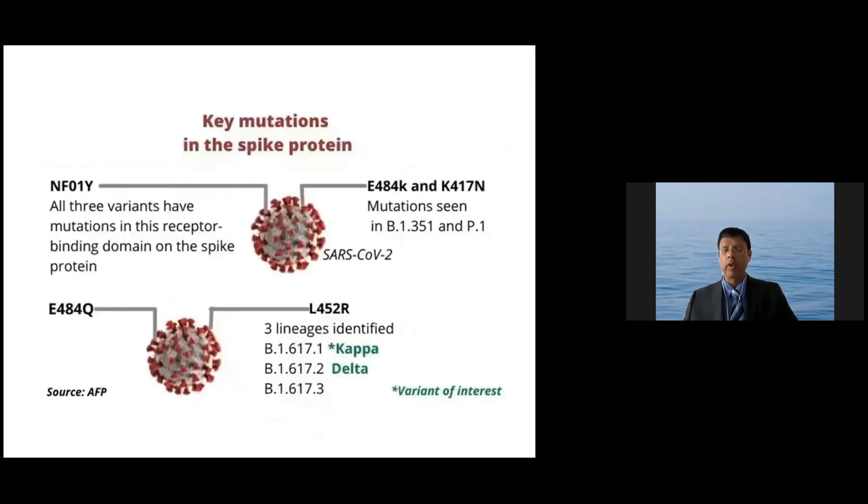And that is the Indian variant, also called delta variant now. So the delta variant has two subgroups—three subgroups, sublineages. The Indian variant has three sublineages: one, two, and three. And the one is called the kappa variant, and the number two is called the delta variant.